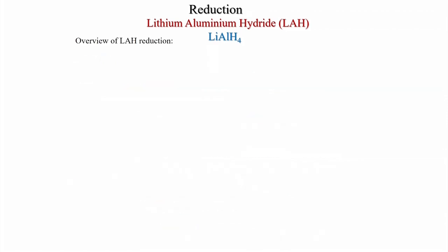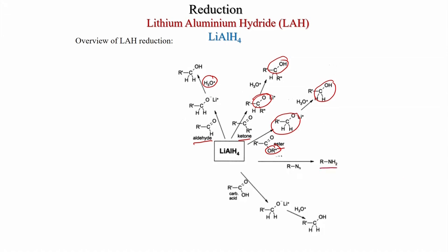Overview of LiAlH4 reduction: aldehydes and ketones are reduced to alkoxides then protonated to give alcohols. Esters undergo elimination to give an alkoxide, then protonation to alcohol. Carboxylic acids: the OH is eliminated giving an alkoxide, proton source gives the alcohol. Azides give amines. Nitriles can be reduced to amines; amides go to amines. In all carbonyl cases, the product is an alcohol.